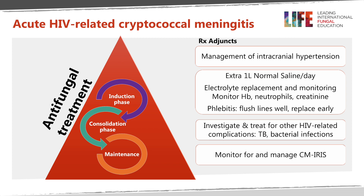Also don't forget to look carefully at any lines used for giving intravenous amphotericin B, because of the phlebitis the drug is associated with. It's important to flush the lines well and also to replace them early if they become inflamed, because of the significant and potentially serious consequences of secondary bacterial line infections.